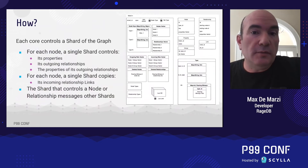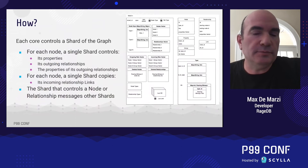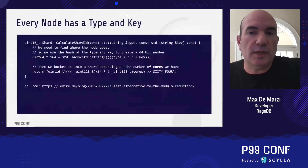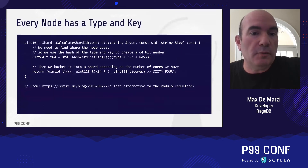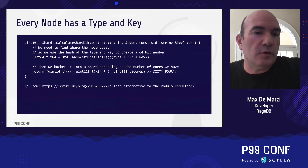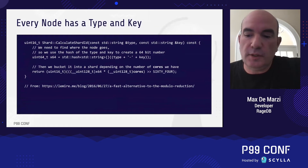In RageDB, we require every node to have a single type and a key — imagine a user node with a username for a key. We hash the type and key and bucket it into one of our shards, where each shard corresponds to one CPU core. Using a method from Daniel Lemire, we randomly distribute our nodes across these cores and shards.